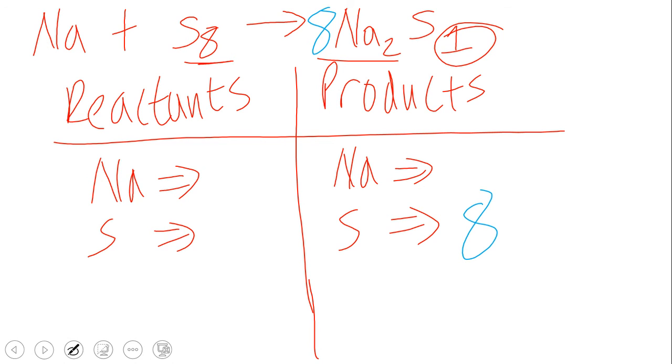We'll have eight for S on this side and eight for S on this side. But also note that for sodium, for Na, it's going to be eight times two. But eight times two is sixteen.